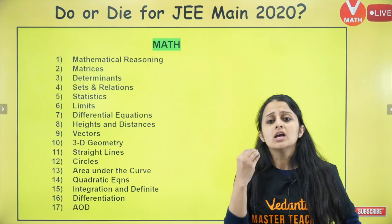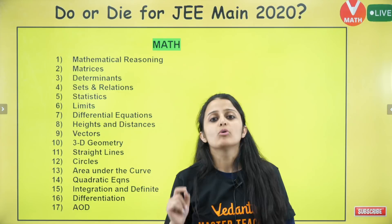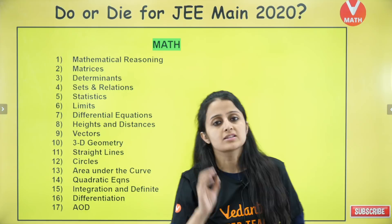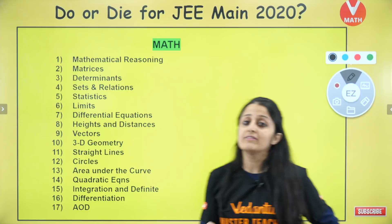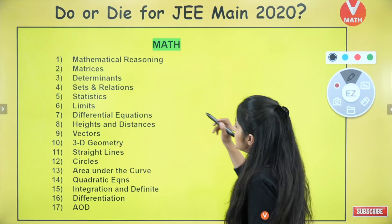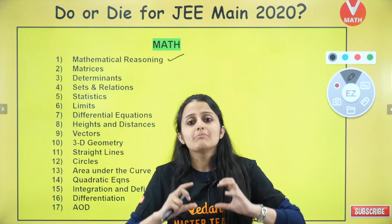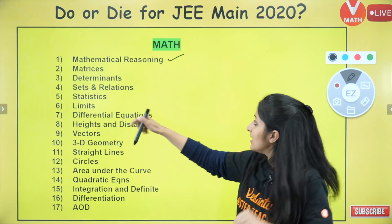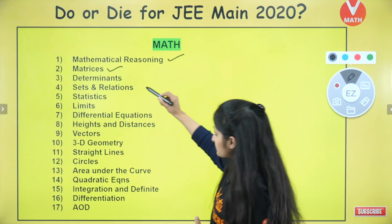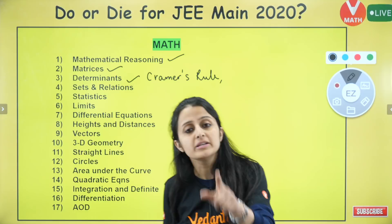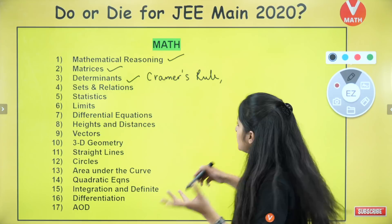Let me quickly tell you what type of questions are asked normally. For mathematical reasoning, if you have done basic NCERT level with past year questions, my mini capsule will help you crack it. For determinants, the most popular topic is Cramer's rule — give me a thumbs up if you agree Cramer's rule came in January shift. You could also be checked on properties of determinants.